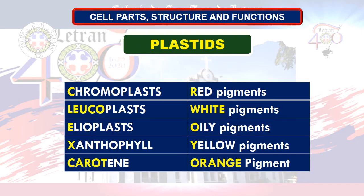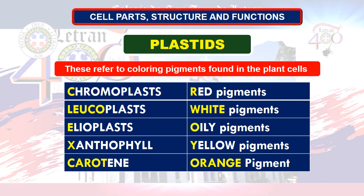Next organelle: plastids. Plastids are double-membrane organelles found in the cells of plants. They refer to coloring pigments found in plant cells. Plastids often contain pigments used in photosynthesis and different types of pigments that can change the color of the cell. Examples include: chromoplast — red pigments; leukoplast — white pigments.